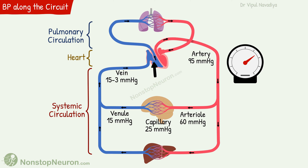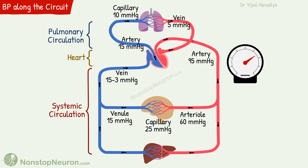Then we have the right heart, which pumps blood into pulmonary circulation. Here, pulmonary arteries have a pressure of about 15 mmHg. Capillary pressure is about 10 mmHg. And in pulmonary veins, it's about 5 mmHg. Note that pressure at many points oscillates with the cardiac cycle and other factors — we are considering only mean pressure here to keep the discussion simple.